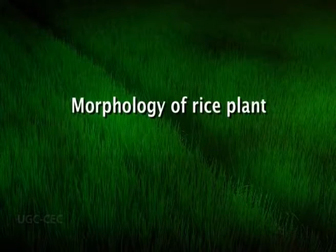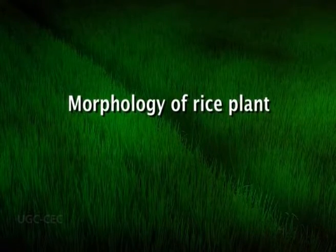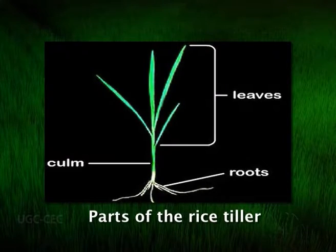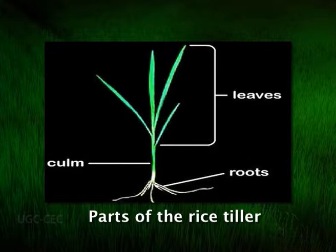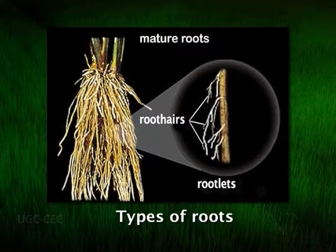Oryza sativa has evolved from its wild perennial relative Oryza rufipogon, while Oryza glaberrima has evolved from Oryza longistaminata. The rice plant is a semi-aquatic, tillering annual grass with a cylindrical jointed stem. The internodes are shortest at the base and become progressively longer. Generally rice has a shallow root system.